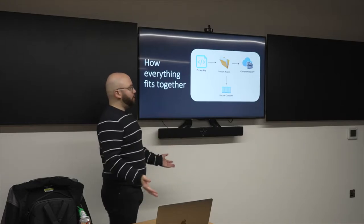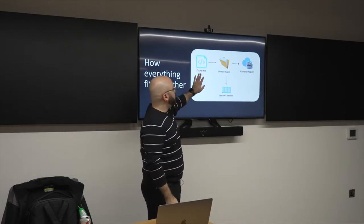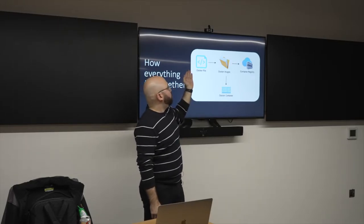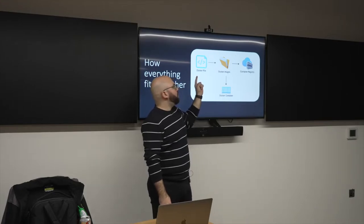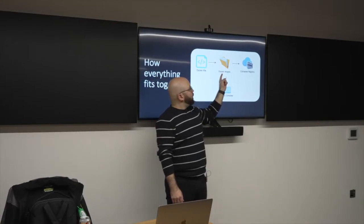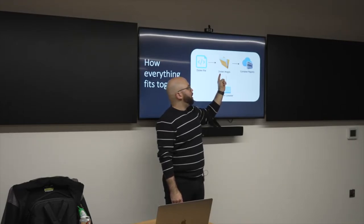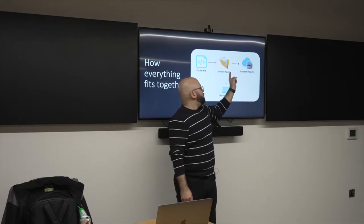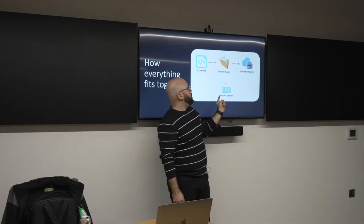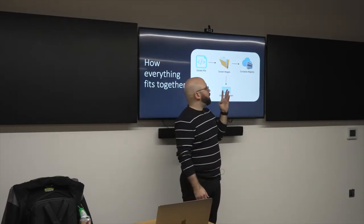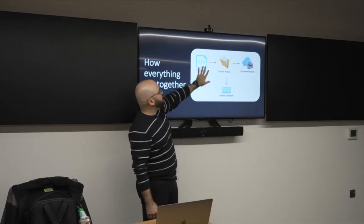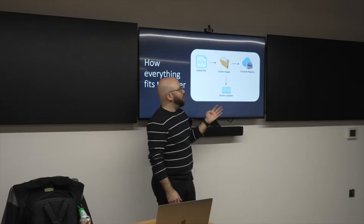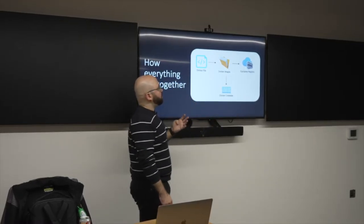So how does everything fit together? First, we create our Dockerfile — our instruction set. Once we have the Dockerfile, we execute one command and create a Docker image. That Docker image currently exists on our development machine. We can then push it to our container registry — Docker Hub, Azure Container Registry, and so on — or we can execute it to generate a container, which is our running application. In summary, there are four principles of containerization: the Dockerfile, Docker images, the registry, and containers.